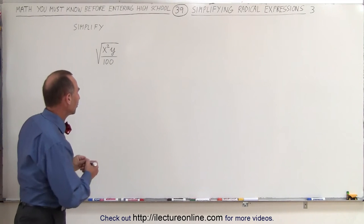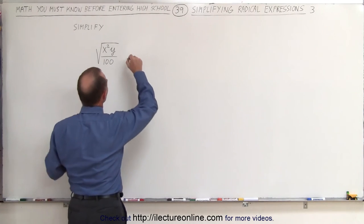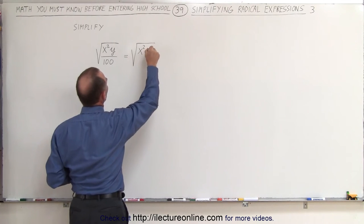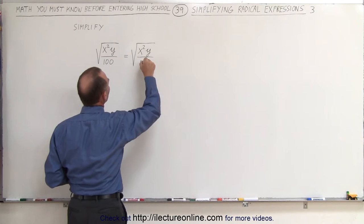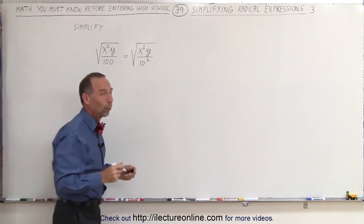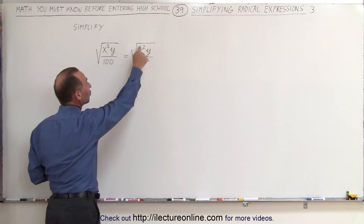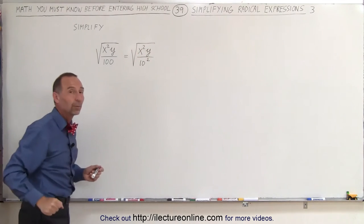We're going to rewrite that one first. This can be written as the square root of x²y over 10², because 100 is the same as 10². But we know the rule that the square root of something squared, we can simply take that outside the radical.